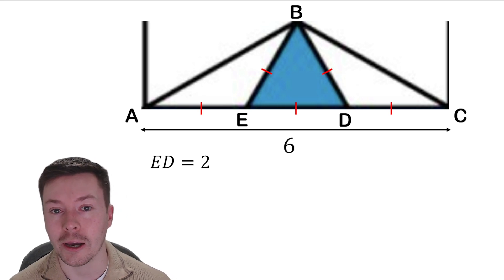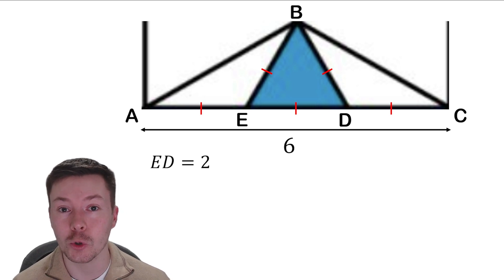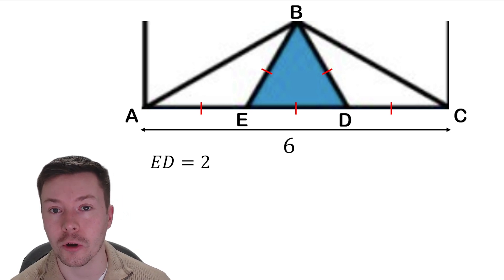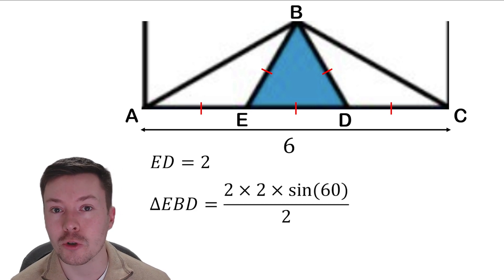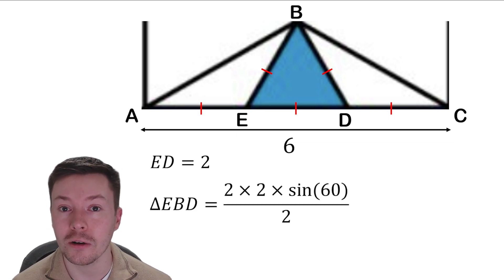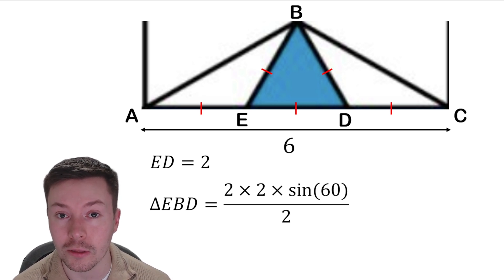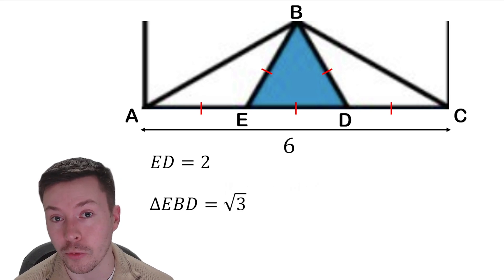Now we can then work out the area of this equilateral triangle. We know the angles in an equilateral triangle are 60 and we've got two sides of length 2. So we're going to use the formula for area of a triangle: half AB sine C. So the area of triangle EBD is equal to a half of 2 times 2, that's two of the sides times together, times by sine of the angle in between those sides which has got to be 60. That gives us an answer of √3.